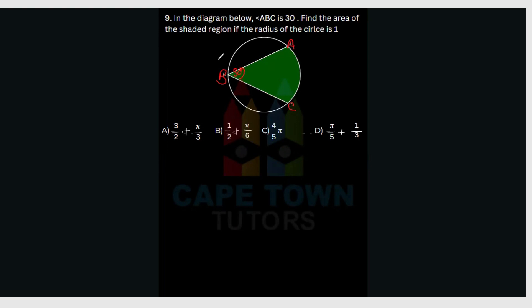We are given the angle at the circumference. With the angle at the circumference, we can get another angle, because the angle at the circumference is half the angle at the center — meaning the one at the center would be double the one at the circumference. So if we draw lines to the center from those two points...